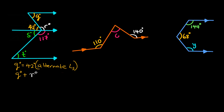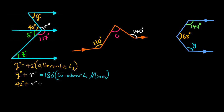Co-interior angles are supplementary means that when you add the two interior angles, they always sum up to 180 degrees. So we say Q plus R is equal to 180 degrees — that's co-interior angles for parallel lines. The two slash marks here represent parallel lines. Since Q is 42 degrees, we have: 42 degrees plus R equals 180 degrees, so R is equal to 180 minus 42, which gives us R equal to 138 degrees.